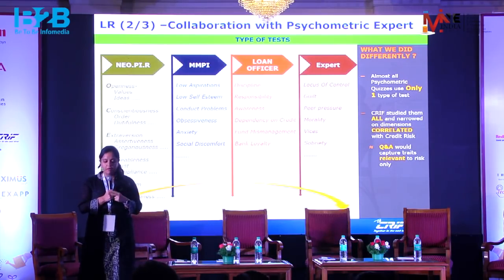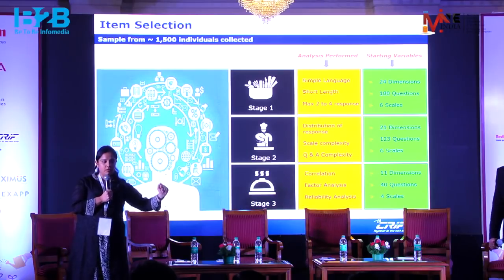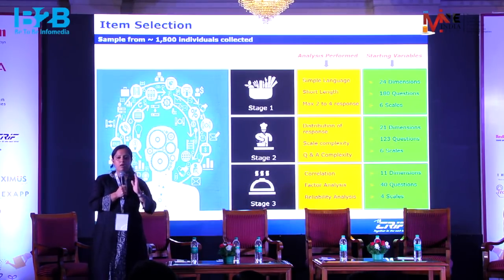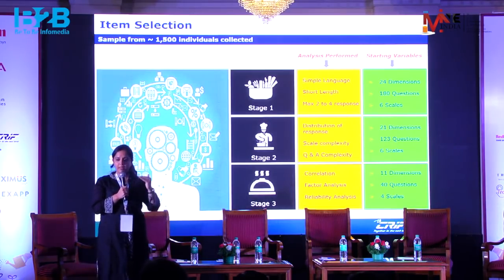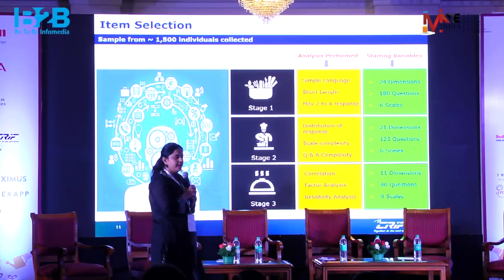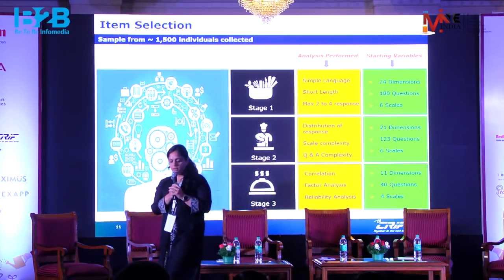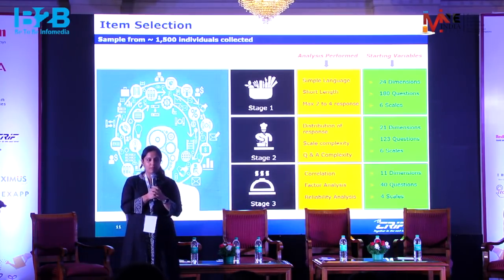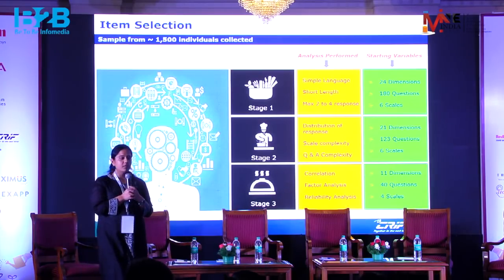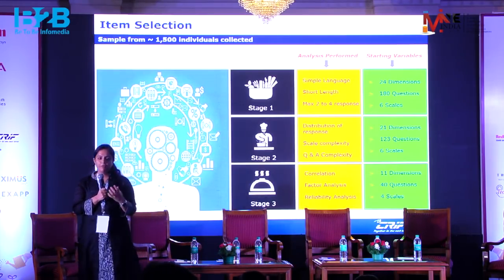Questions — referred to as items — were formulated across 24 dimensions and six scales, starting with approximately 180 questions. Key constraints were: language had to be very simple for the target audience, questions had to be short so loan applicants don't spend too long, and answer options were limited to two to four choices. This was Stage 1: item writing.